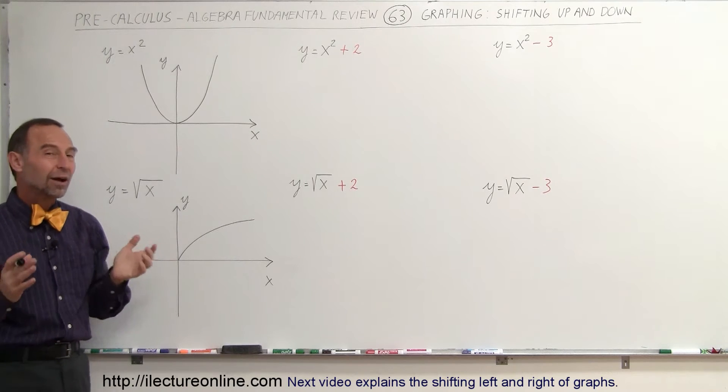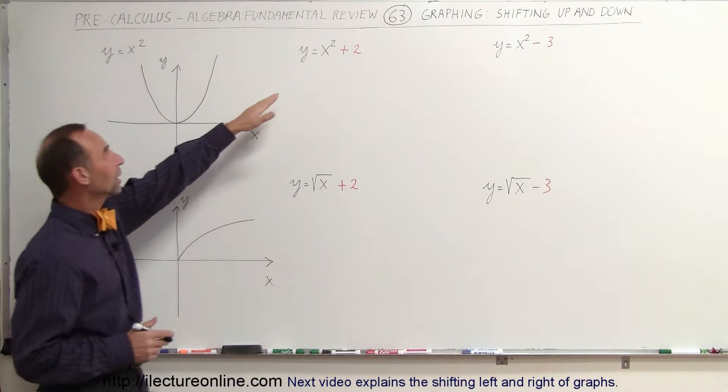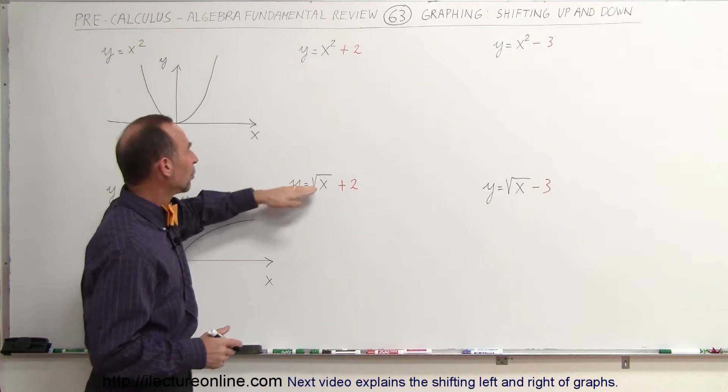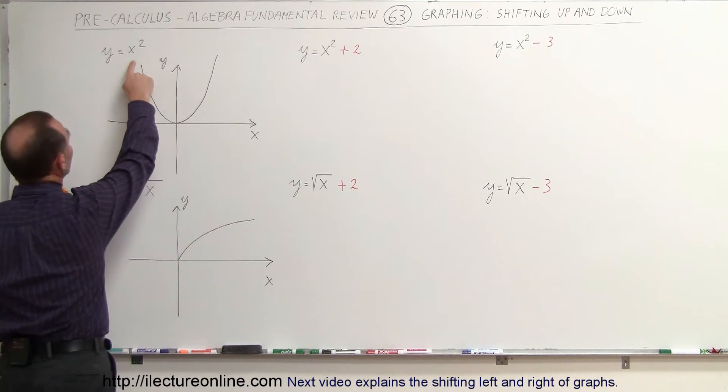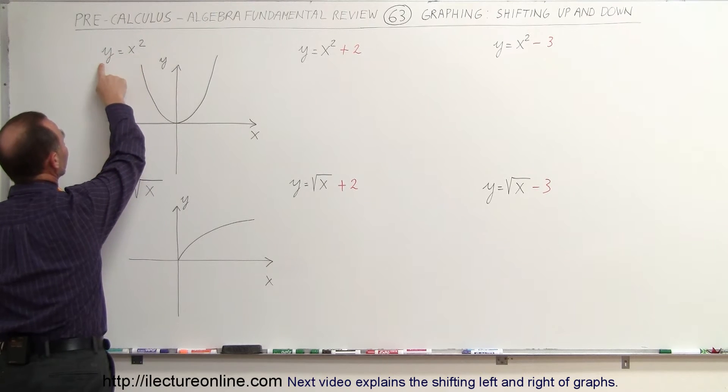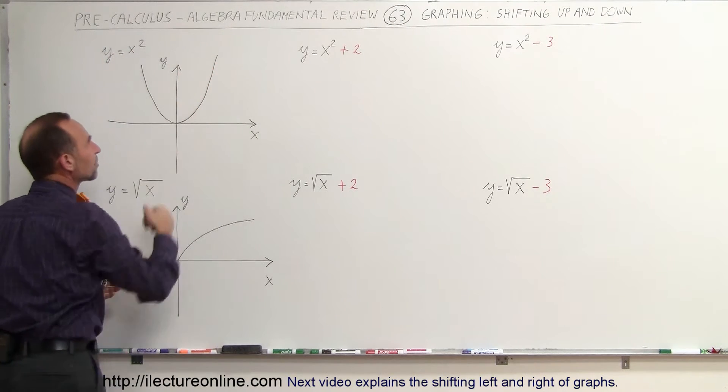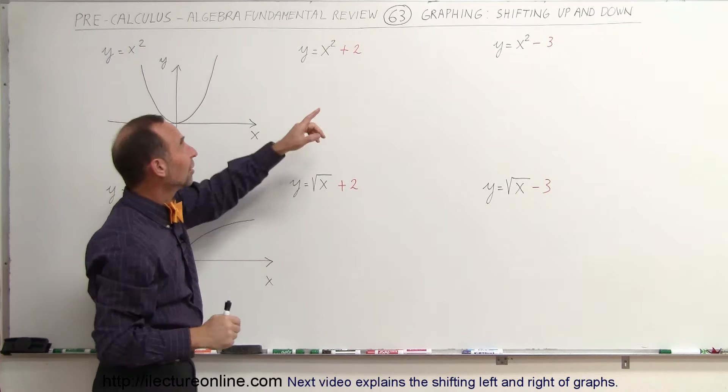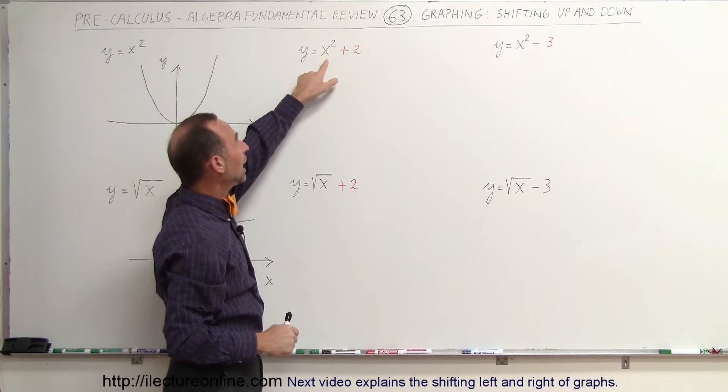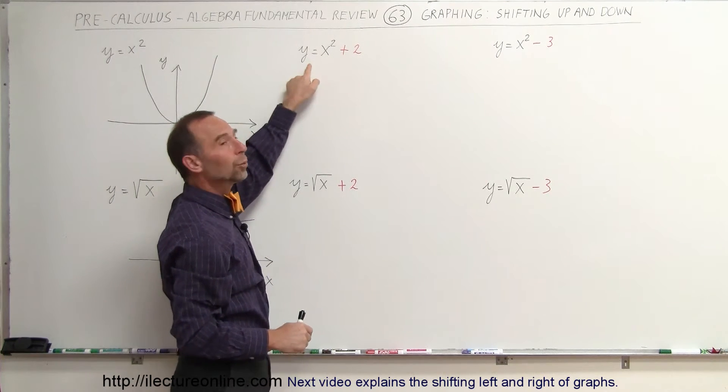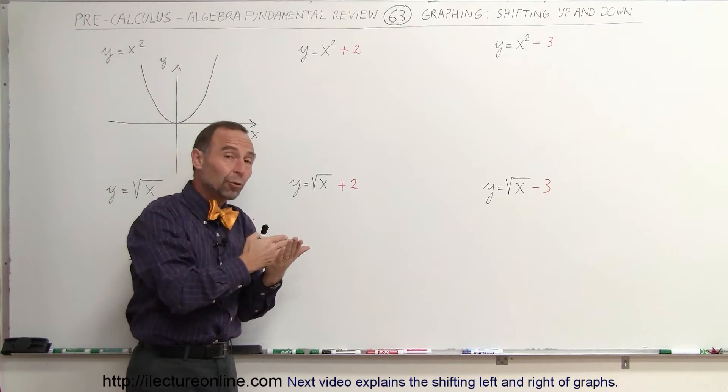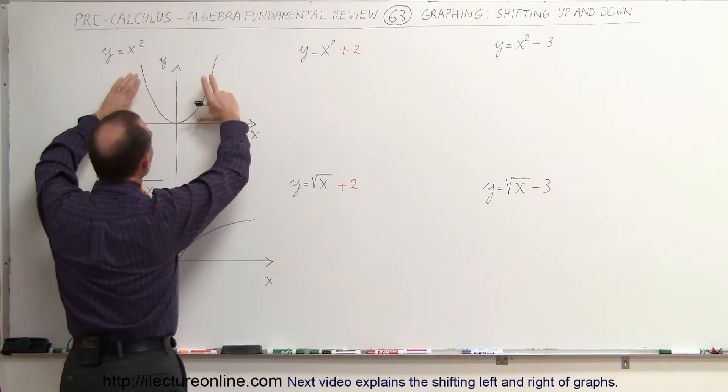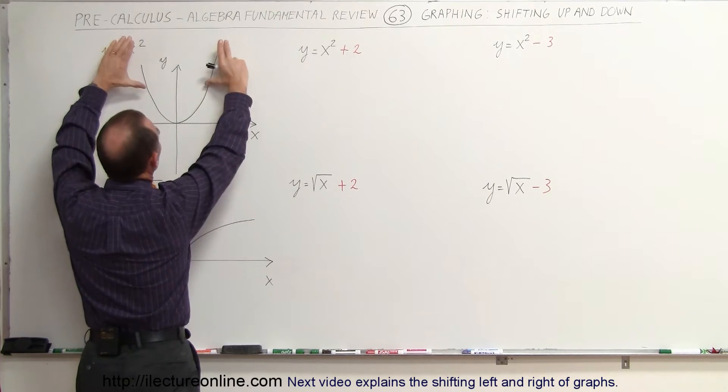Now, how does the graph change when we write y equals x squared plus 2, and y equals the square root of x plus 2? Well, what this means is that for any particular value for x, you have a corresponding value for y, and that's what gives you this graph. Now, what we're saying is that for any given value for x, we're going to add 2 to that, and that equals y, which means that y will be 2 more than it was before for every value of x, which means it takes the entire graph and lifts it up 2 units.